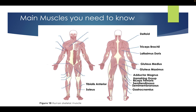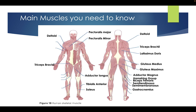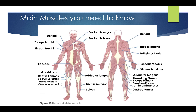Moving across to the front of the body, we've got the soleus, the tibialis anterior, the adductor longus, the pectoralis minor, the pectoralis major, the deltoid, the tricep brachii, the bicep brachii, the iliopsoas, and the quadricep group — so the rectus femoris, the vastus lateralis, the vastus medialis, and the vastus intermedius, which you can't quite see because it's slightly behind the muscle, and the gastrocnemius.